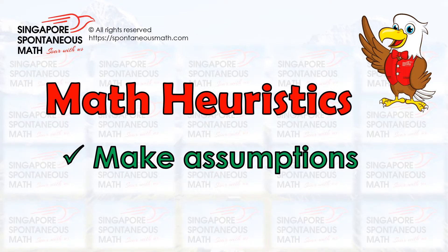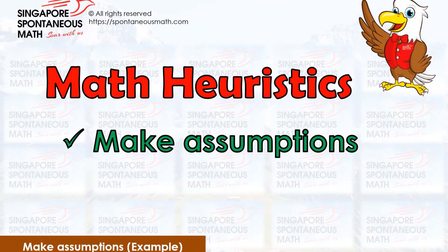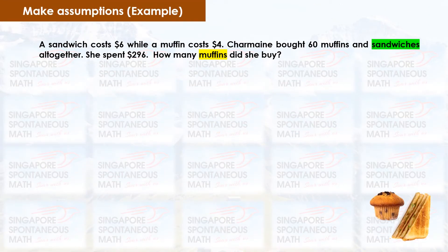Let's look at an example. A sandwich costs $6 while a muffin costs $4. Charmaine bought 60 muffins and sandwiches altogether. She spent $296. How many muffins did she buy?